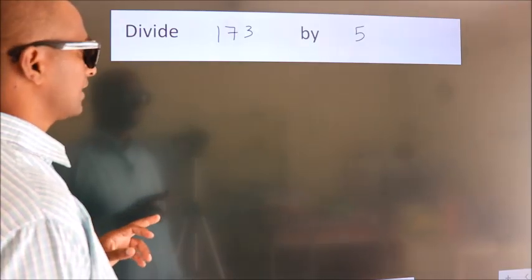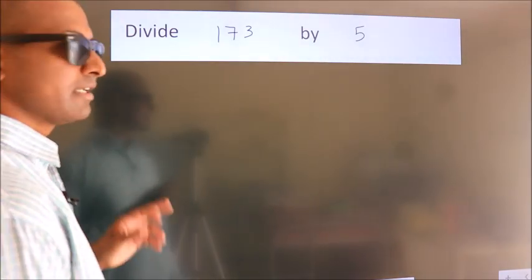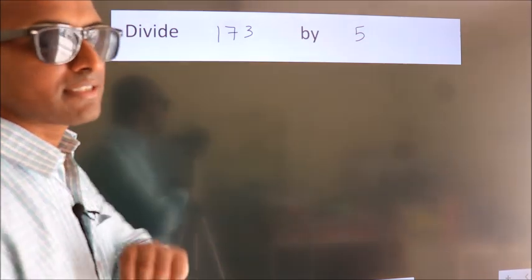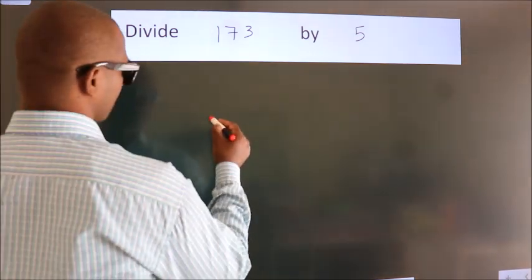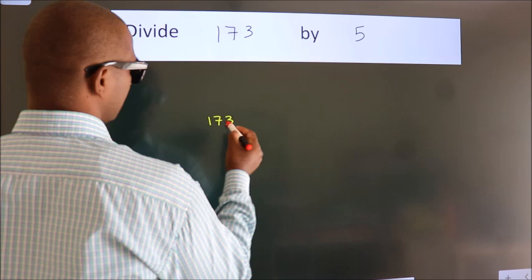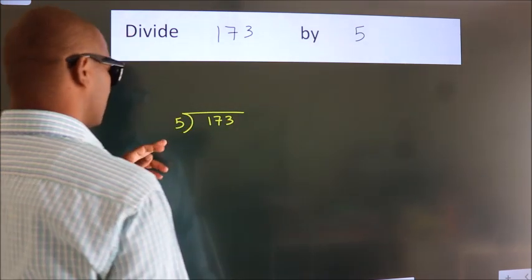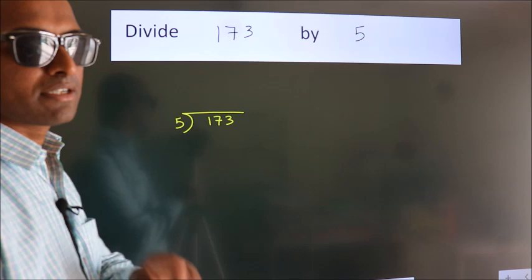Divide 173 by 5. To do this division, we should frame it in this way. 173 here, 5 here. This is your step 1.